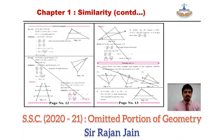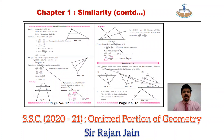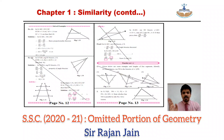Continuing with the chapter on page number 12, the second solved example — you can strike that out. Also the activity at the bottom of page number 12, you can strike out. On page number 13, top of the page, you can cancel out that activity as well. Then practice set 1.2 — entire question number 1 is omitted: subpart 1, subpart 2, subpart 3. All three questions are omitted.